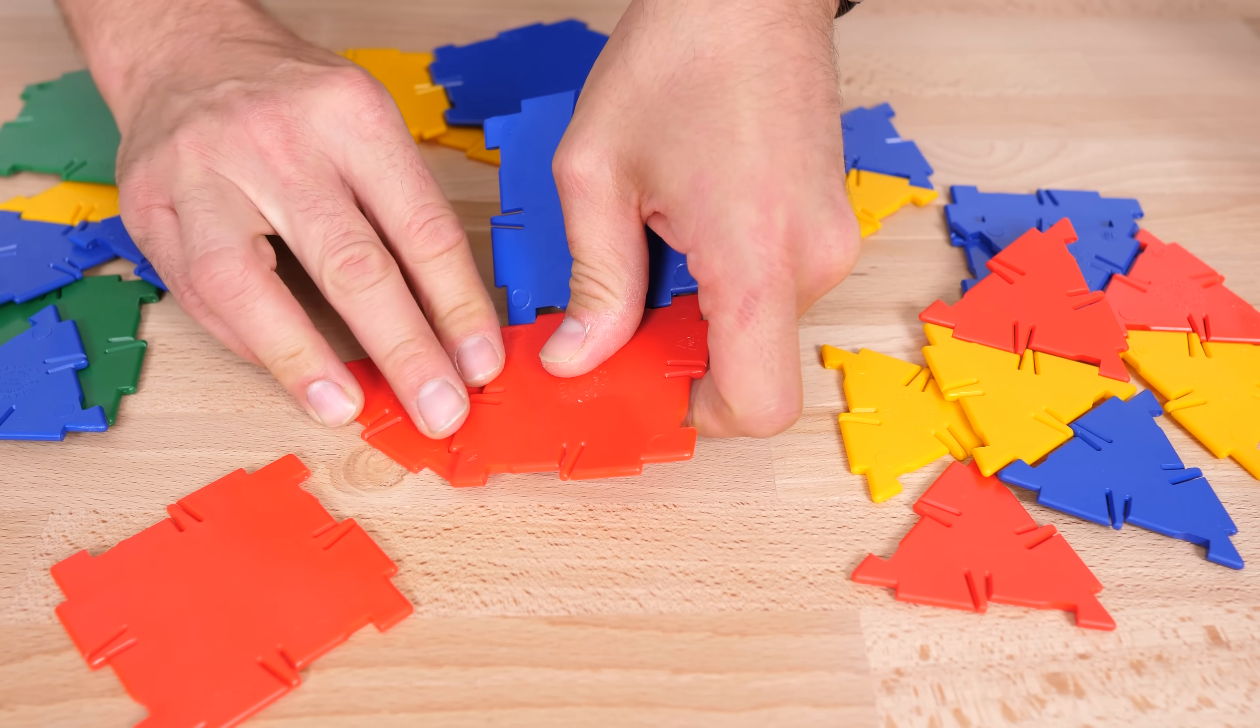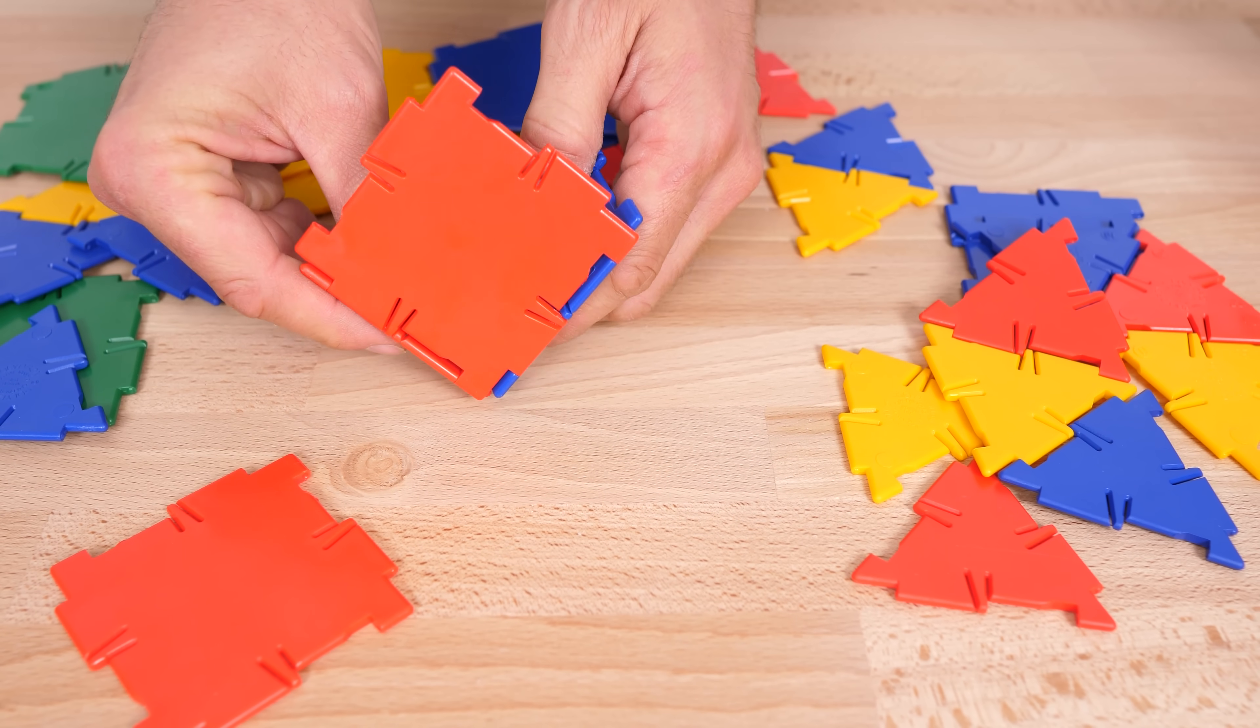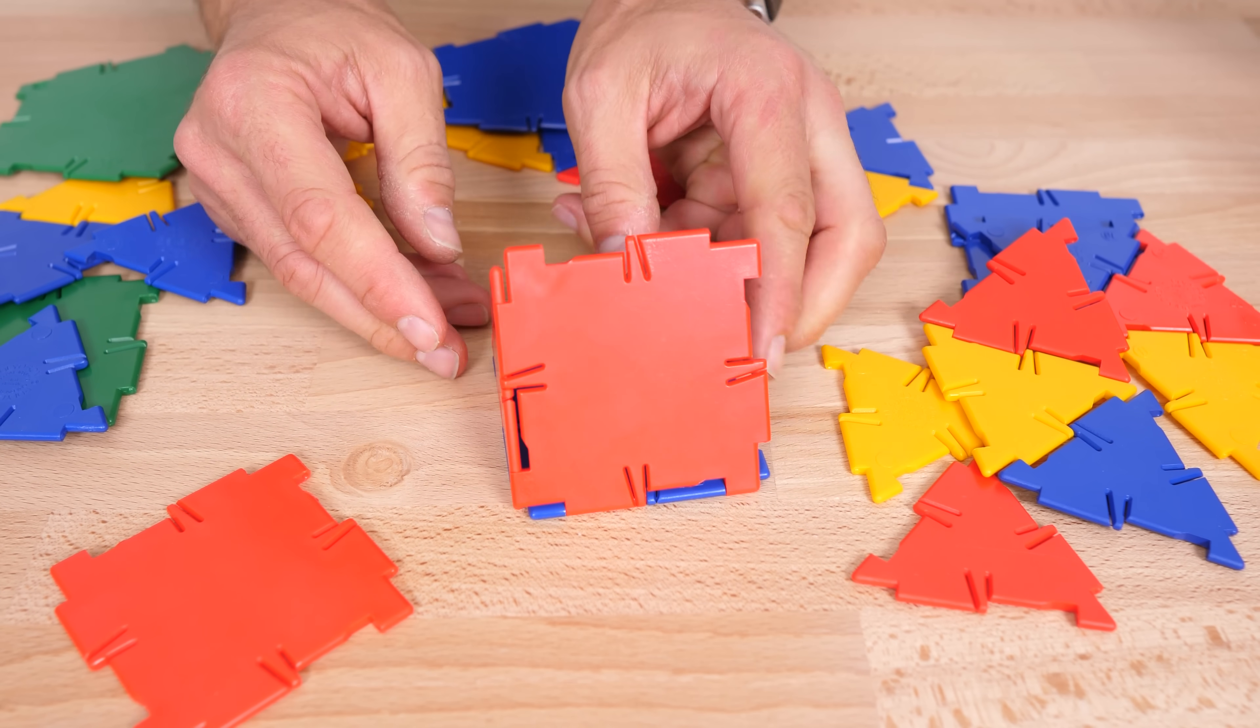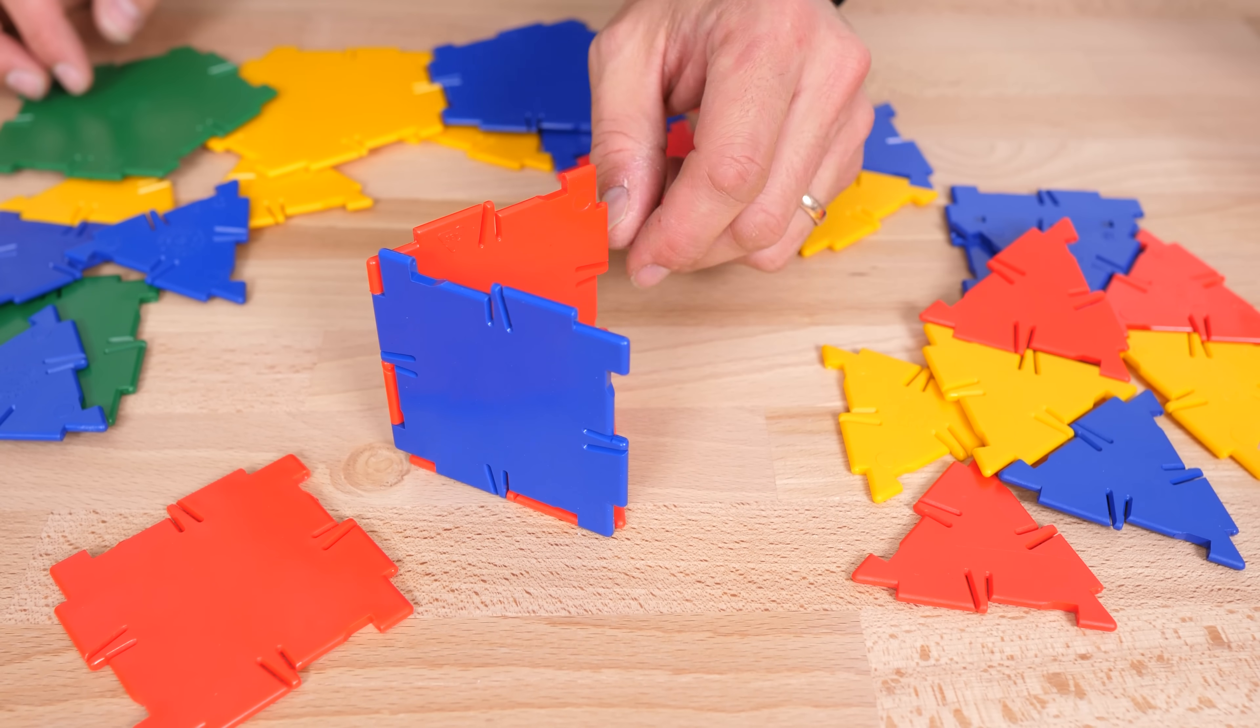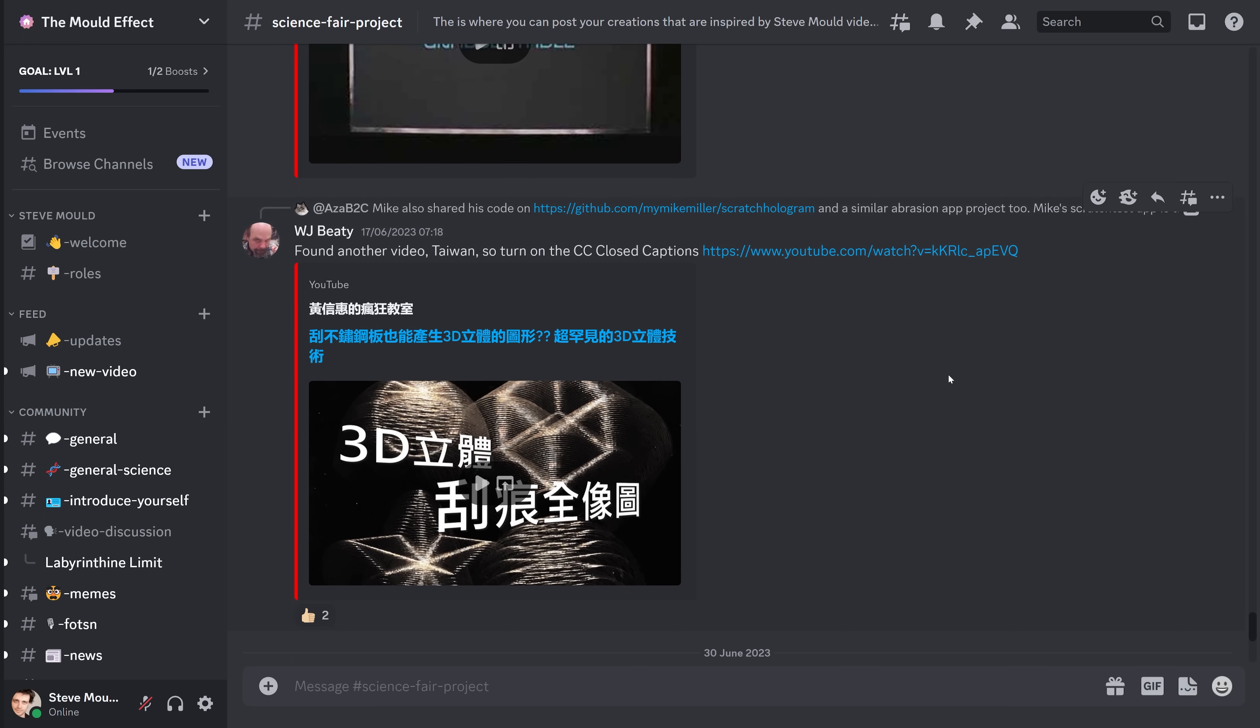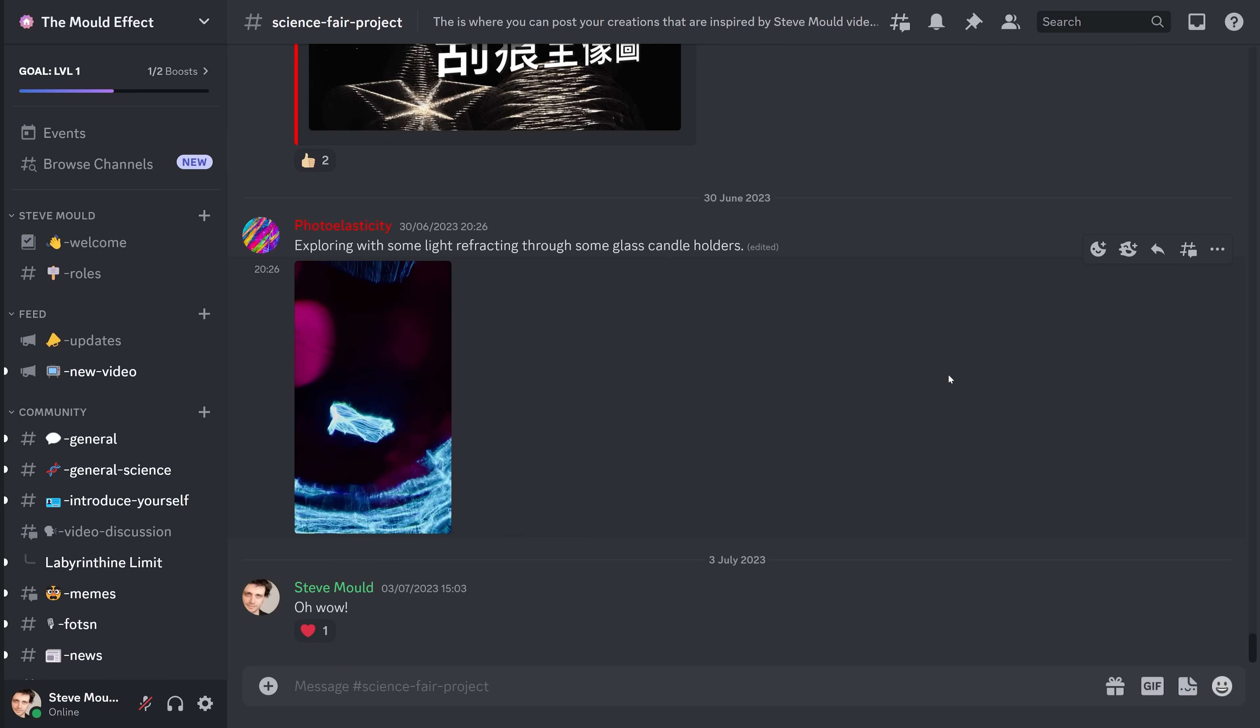Does there exist a polyhedron where if you remove just one of the faces, you end up with two degrees of freedom? If you fancy having a play, I'd love to see what you've come up with. The best way to share your discoveries is probably on my Discord server, specifically the Science Fair Project channel. Link to the invite in the description. Join us. But anyway, I suspect that two degrees of freedom when you remove a single face from a polyhedron is not possible. I'm calling it the mold conjecture.